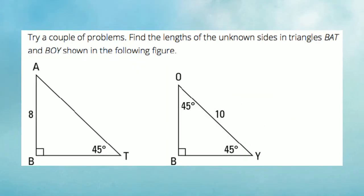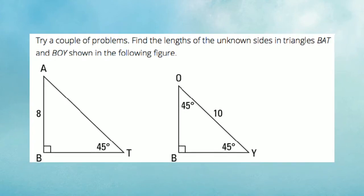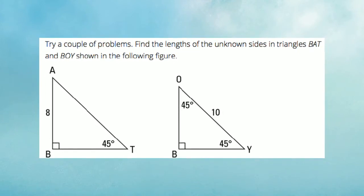We can use the properties of a special right triangle, like shown below, to solve for their lengths. Let's try a problem. Find the lengths of the unknown sides in the triangle BAT and BOY shown in the following figure.